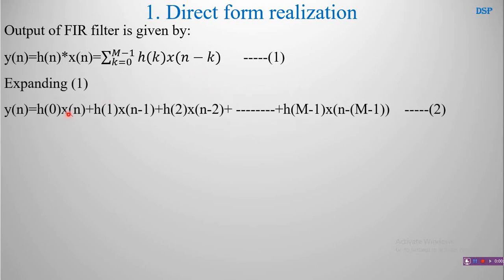Expanding this summation we have Y(n) = H(0)·X(n) + H(1)·X(n-1) + H(2)·X(n-2) and so on. With n varying from 0 to m-1, the last term is going to be H(m-1)·X(n-(m-1)).